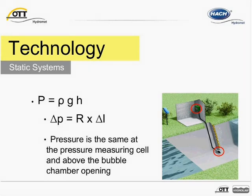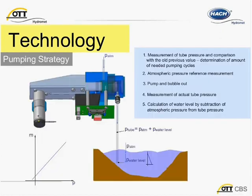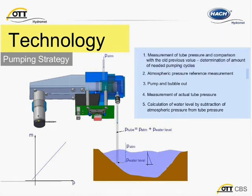With static systems, sources of error that result from changes in air flow are thus eliminated. To take a more detailed look at a static system, let's go through the intelligent pumping strategy of the CBS. Measurement of tube pressure, which is compared to the previous measurement, is step number one. This helps to determine the number of required pump cycles.